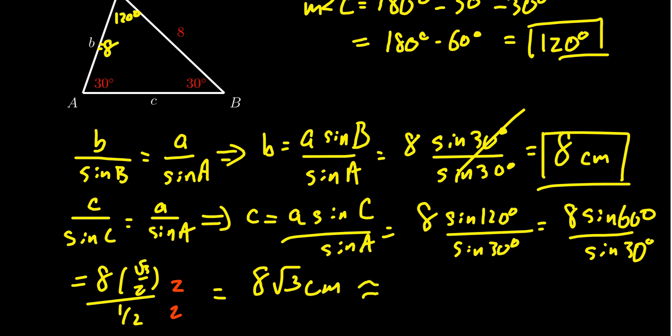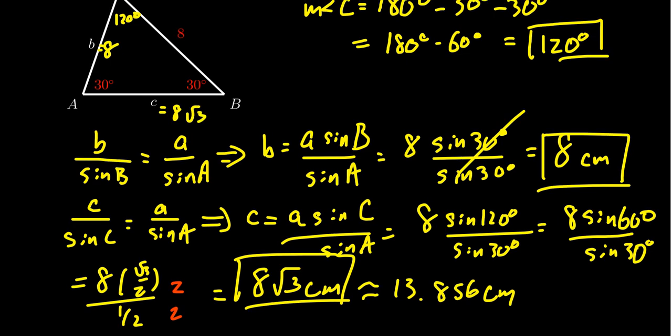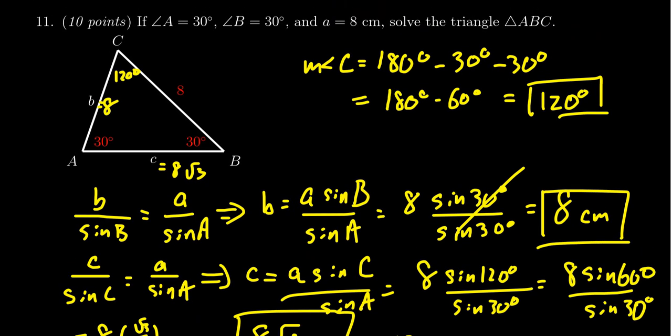If we want an approximation, you could have approximated 13.856 centimeters, which also would be acceptable. But exact answers are definitely preferred on these, so we see the exact value here would be 8 times the square root of 3. And that finishes this oblique triangle that we've now solved.